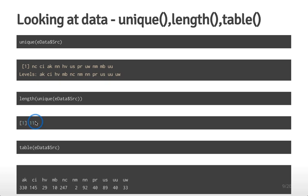If you see more or fewer unique values than expected, you can quickly assess a problem with the data. You can also do a table of qualitative variables. Note that doing table() on a quantitative variable gives a very big table since every value may be unique. But for a qualitative variable like edata$source, table() lists each unique value and the number of times it appears — we saw in summary that AK appeared 330 times, and table confirms this while also showing counts for all other values.